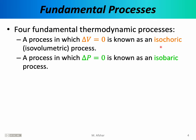An isobaric process is also a fundamental thermodynamic process. An isobaric process is one in which the pressure remains constant. In an isobaric process, the volume and the temperature can change in arbitrary ways, but P initial must equal P final. Stated differently, delta P must be zero for an isobaric process.